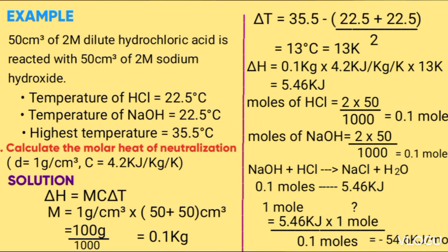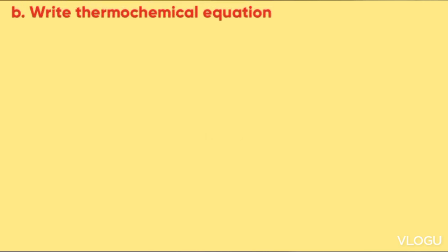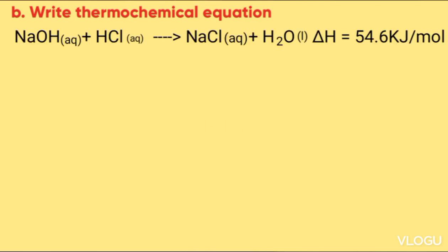The negative sign results from the temperature rise due to the exothermic reaction. B: Write the thermochemical equation. When writing the thermochemical equation, write the balanced chemical equation that includes the enthalpy change. The equation is: NaOH + HCl → NaCl + H₂O, ΔH = −54.6 kJ/mol. The energy level diagram is shown below.